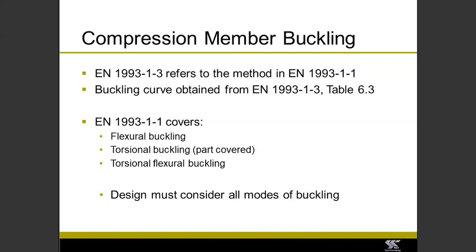There are three different types of buckling that we need to consider for light gauge members: flexural buckling in both major and minor axis, torsional buckling, and torsional flexural buckling, which occur as overall member effects in both directions. We need to consider all of those modes of buckling.